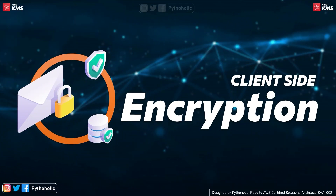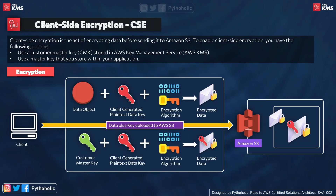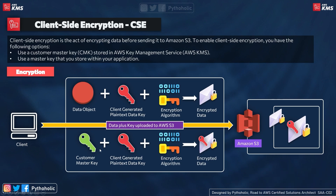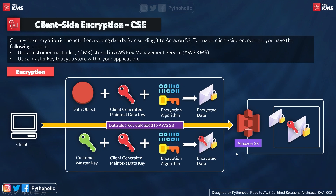Now let's talk about client-side encryption with S3. Client-side encryption is the act of encrypting data before sending it to Amazon S3 — the protection is for data at rest, before storing it in S3. To enable client-side encryption, you can either use a customer master key stored in AWS KMS, or use a master key stored within your own application. You'll need a key to encrypt and a key to decrypt.